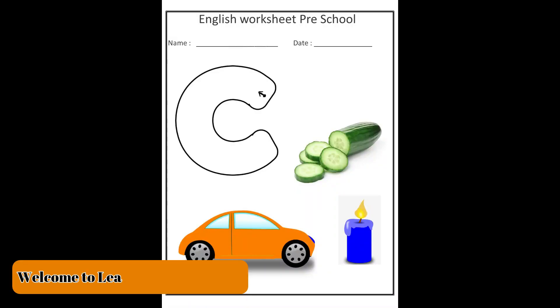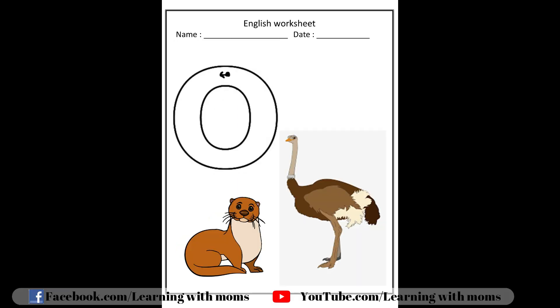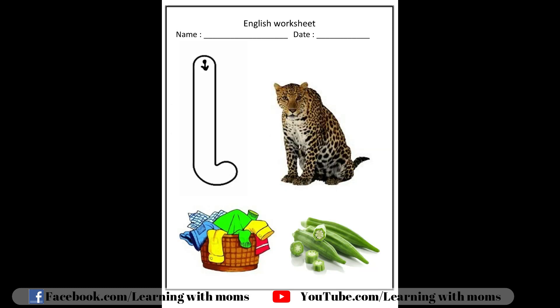K is curvy. O is round and round. L is down with a tail.